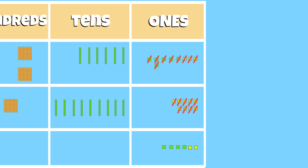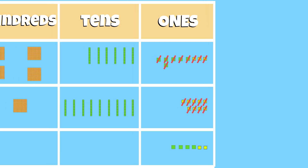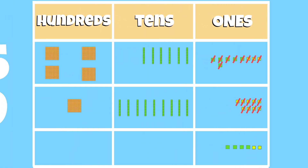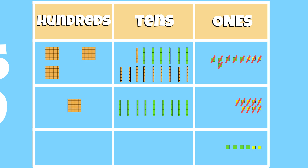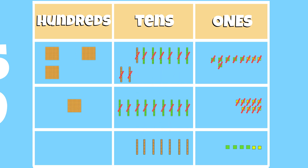In the tens place, we need to subtract 9 from 6. Since we do not have enough tens to subtract 9 from 6, we will regroup and move 1 hundred to the tens place. We now have a total of 16 groups of 10. 16 minus 9 is equal to 7.